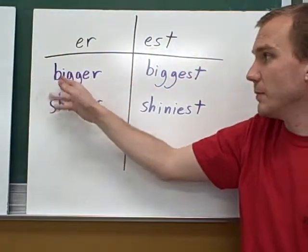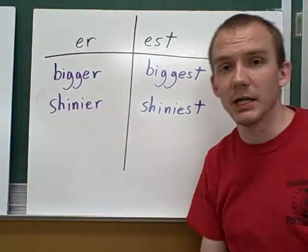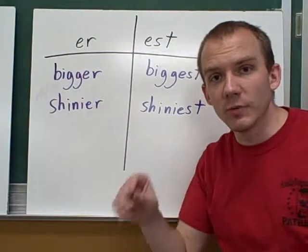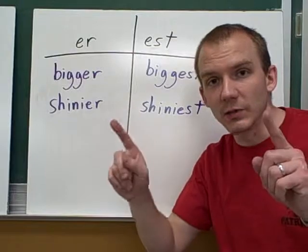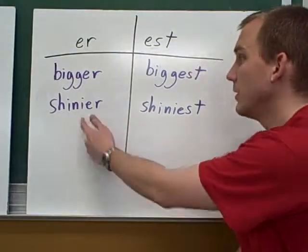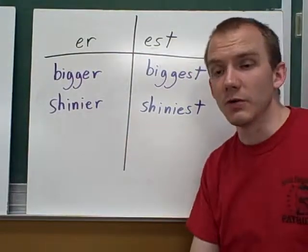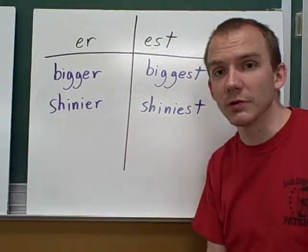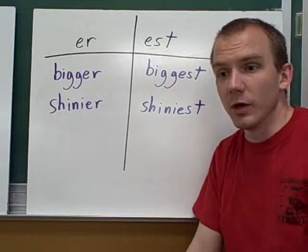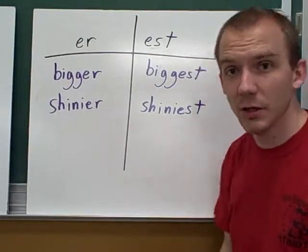For example, the word 'big' — if I add ER, it becomes 'bigger.' So you might have two things and one is bigger than the other. Or 'shiny' — if you compare two things it would be 'shinier,' where one might be shinier than the other.